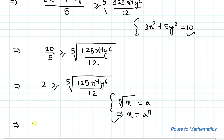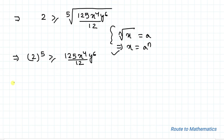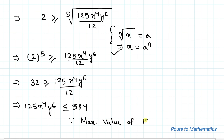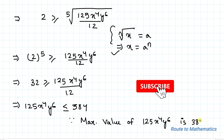Applying the exponential rule, we get 2⁵ ≥ 125x⁴y⁶ / 12. Since 2⁵ = 32, this gives 32 ≥ 125x⁴y⁶ / 12, which implies 125x⁴y⁶ ≤ 32 × 12 = 384. Therefore, the maximum value of 125x⁴y⁶ is 384.